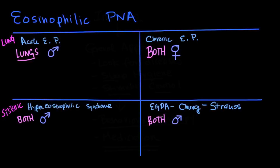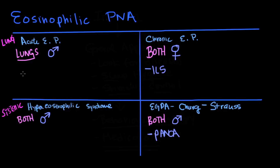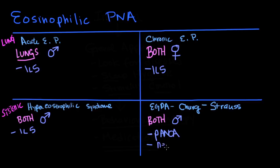In terms of markers, EGPA is unique in that its major marker is P-ANCA, while all the other ones have IL-5 mediation, which makes sense because IL-5 is the major driver of eosinophilia. The other notable feature of EGPA is that you're going to get vasculitis and mononeuropathy.